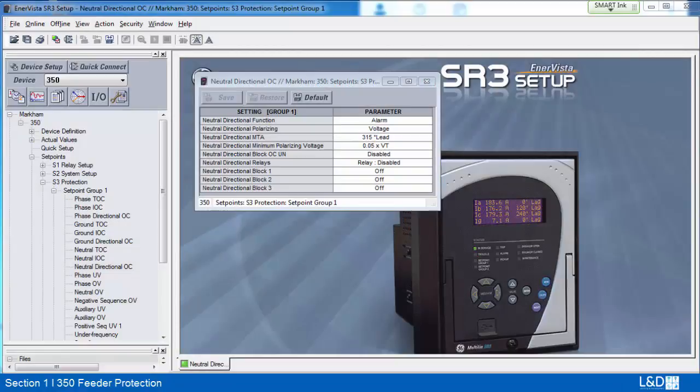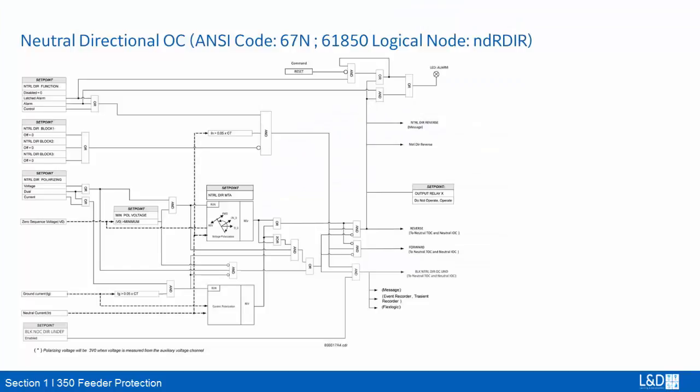From the logic diagram, when polarizing is set to voltage, the direction is determined by comparing the angle between the operating neutral current and the voltage against the set MTA angle. If voltage drops below the minimum polarizing voltage setting, the neutral directional element is undefined. When current polarizing is selected, the direction of the neutral current is determined with reference to the measured ground current. The fault is detected in the forward direction when ground current is within 90 degrees of the polarizing current; otherwise, it is detected as reverse. The neutral directional element is undefined if the polarizing ground current drops below 5% of the ground CT.